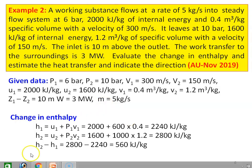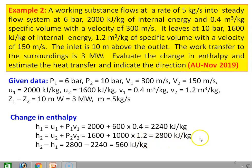Calculating the change in enthalpy: H₁ = U₁ + P₁v₁ = 2000 + 600 kPa × 0.4 = 2240 kJ/kg. H₂ = U₂ + P₂v₂ = 1600 + 1000 × 1.2 = 2800 kJ/kg. Therefore H₂ − H₁ = 2800 − 2240 = 560 kJ/kg.